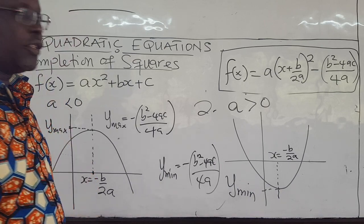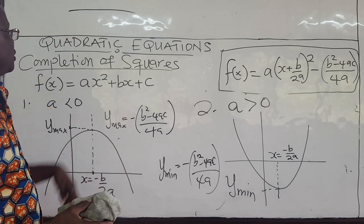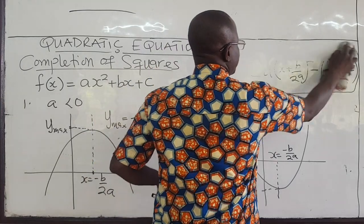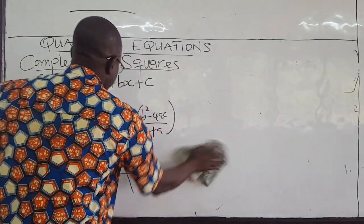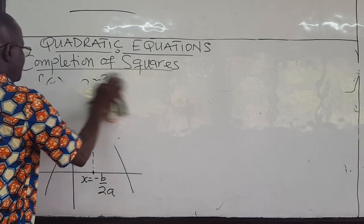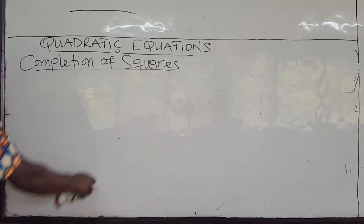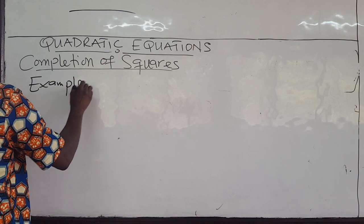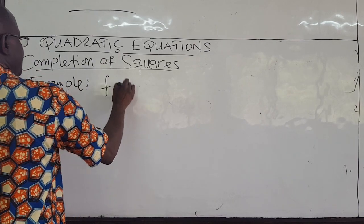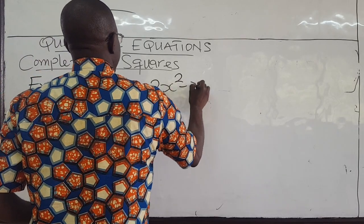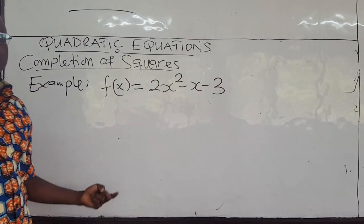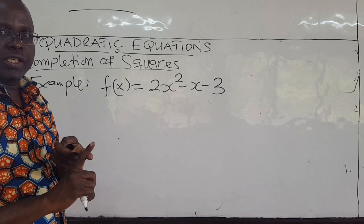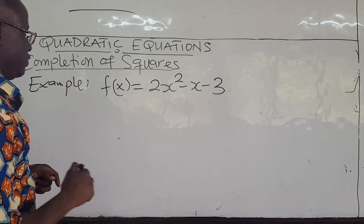We'll take an example to illustrate this. Suppose we have f of x equals 2x squared minus x minus 3. We want to complete the square. And because the coefficient of x squared is positive, we get a minimum. So we look for the line of symmetry and the minimum value of the function.